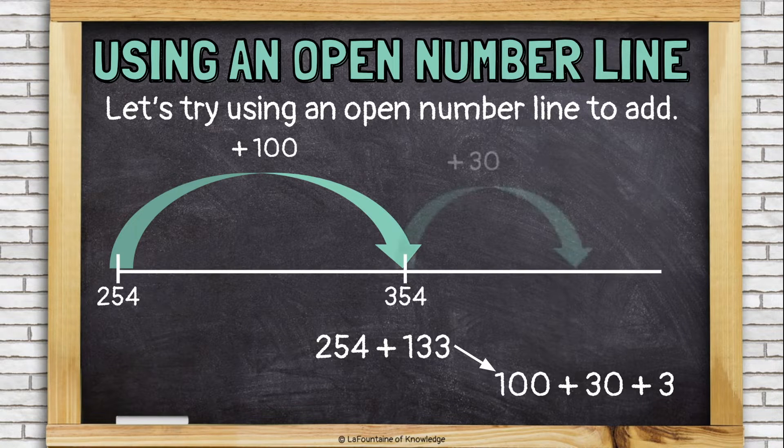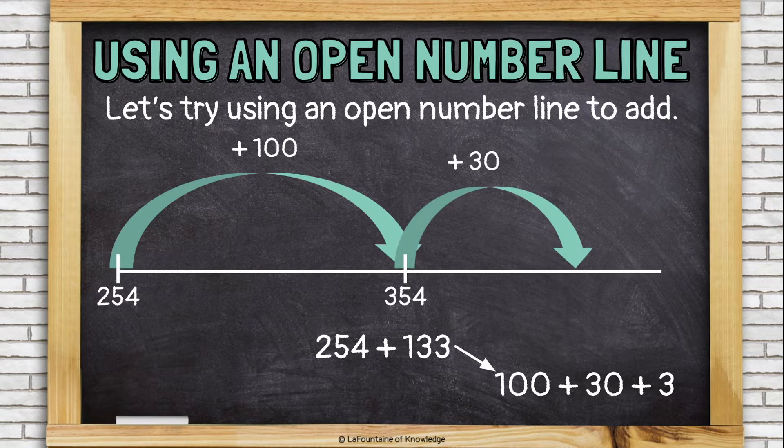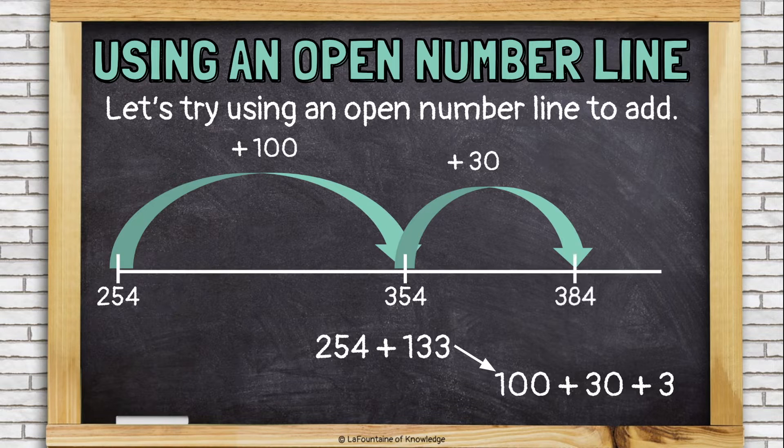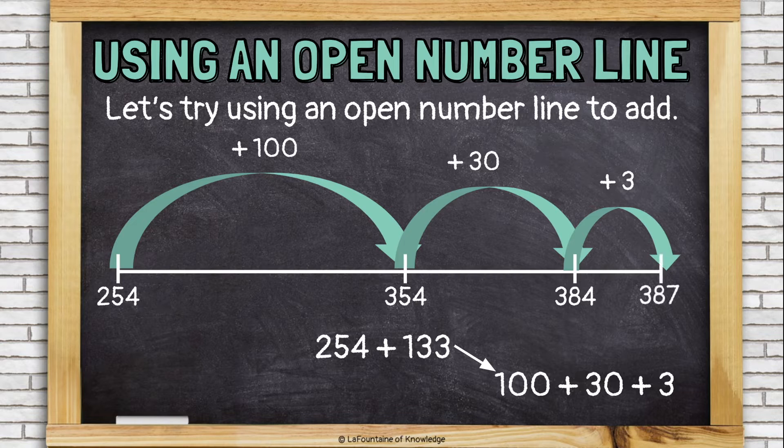Now let's jump forward or add 30. If I'm at 354 and I add 30 more, now I'm at 384. Now I just have to add 3. If I'm at 384 and I add 3 more, I will land at 387.